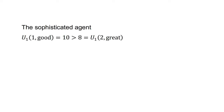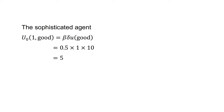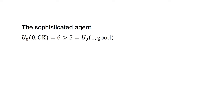Knowing this, the sophisticated agent now decides whether they prefer the okay movie today or the good movie next week. The utility of the okay movie today equals utility(okay) equals 6. The utility of the good movie next week equals beta*delta*utility(good) equals 0.5 times 1 times 10, which equals 5. As the utility of the okay movie today is greater than the utility of the good movie next week, the sophisticated agent prefers the okay movie today. From today's perspective they would prefer the great movie in two weeks, but as they know they will cave in to their present bias next week and watch the good movie, they make today's decision on that basis — they know that if they select the great movie today, they won't watch it.